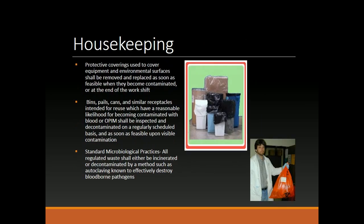Protective coverings used to cover equipment and environmental surfaces shall be removed and replaced as soon as feasible when they become contaminated, or at the end of the work shift. Bins, pails, cans, and similar receptacles intended for reuse which have a reasonable likelihood for becoming contaminated with blood or a PIM shall be inspected and decontaminated on a regularly scheduled basis, and as soon as feasible upon visible contamination. Regulated waste shall either be incinerated or decontaminated by a method such as autoclaving known to effectively destroy bloodborne pathogens.